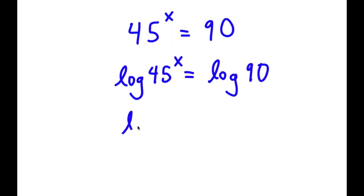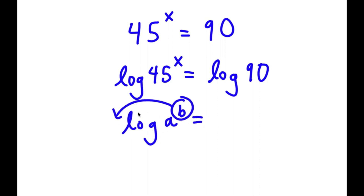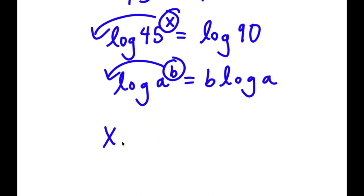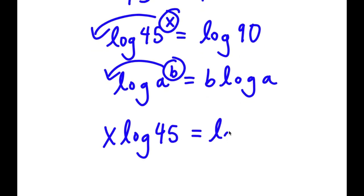If I have something in the form log a to the power of b, I can move the exponent b to the front. So this is the same thing as b times log a. In this case, I have log 45 to the power of x, and I can move x to the front. So now this is x times log 45, which is equal to log 90.